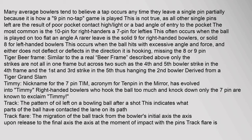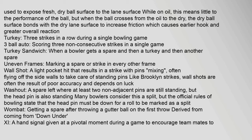Track: the pattern of oil left on a bowling ball after a shot, indicating what parts of the ball have contacted the lane. Track flare: the migration of the ball track from the bowler's initial axis (upon release) to the final axis (at the moment of impact with the pins). Track flare exposes fresh, dry ball surface to the lane — when the ball crosses from oil to dry, the dry ball surface bonds with the dry lane surface, increasing friction, causing earlier hook and greater overall reaction. Turkey: three strikes in a row during a single bowling game.